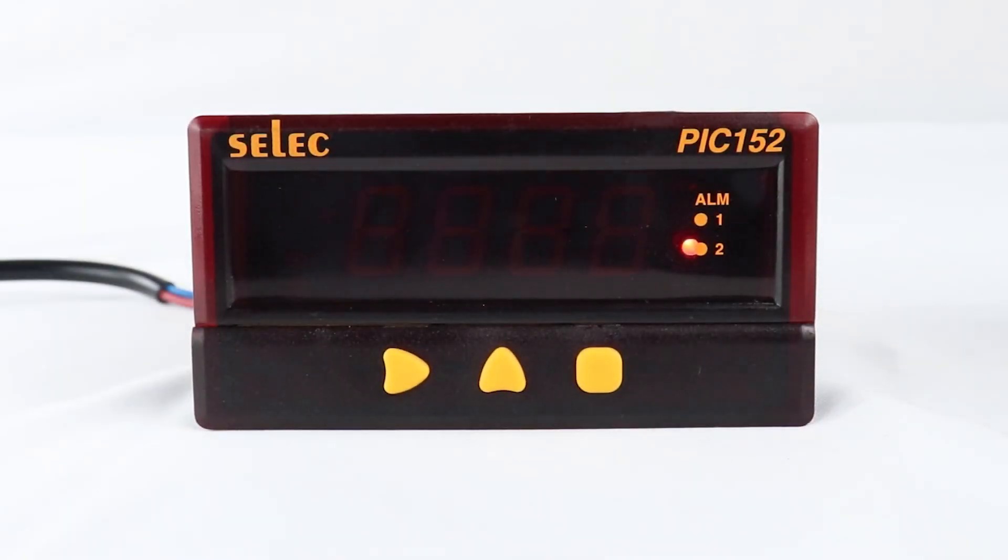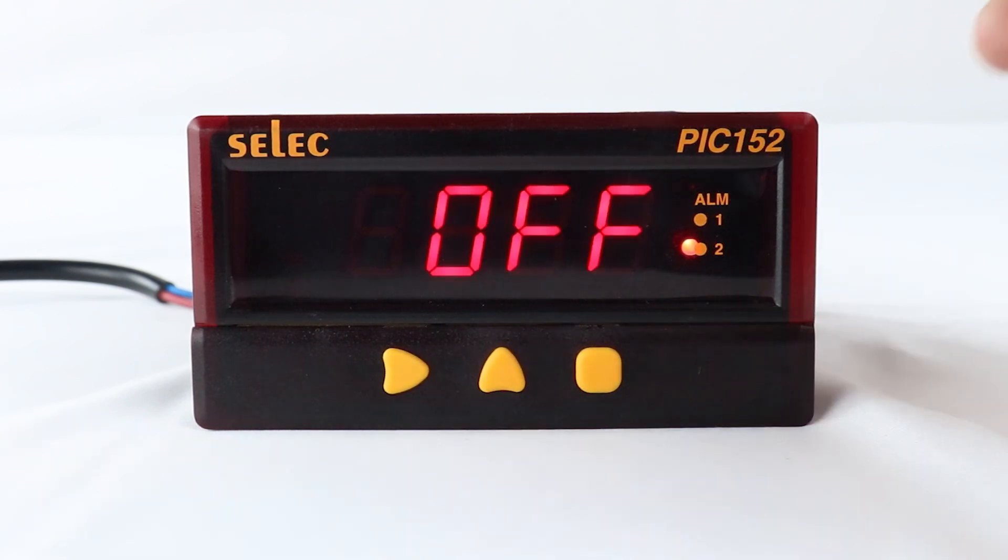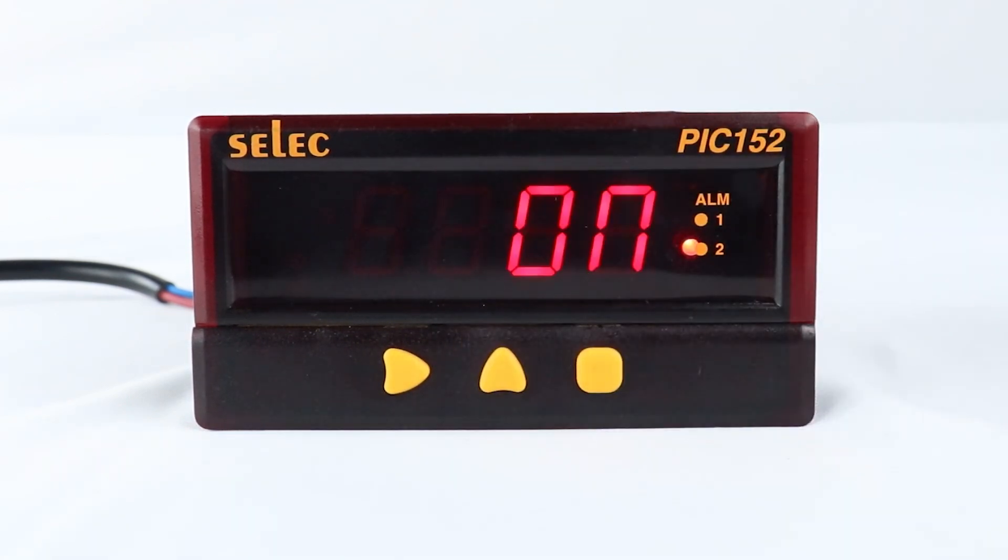Now, alarm latch. In on condition, the alarm is latched until it is acknowledged manually, even though the alarm condition may have disappeared.